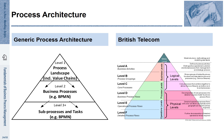The level of detail increases from A to F. At level F, we have many fine-grained representations of various activities across different processes, while at level A there is one overarching, very abstract representation. As a rule of thumb, from each level to the next, the number of elements increases by a factor of 10.